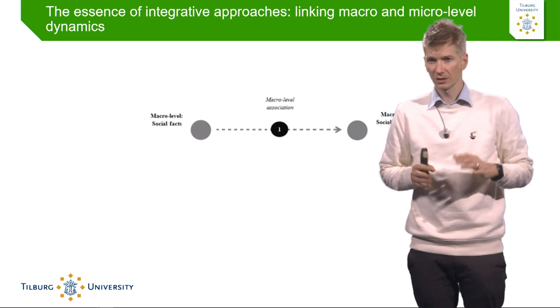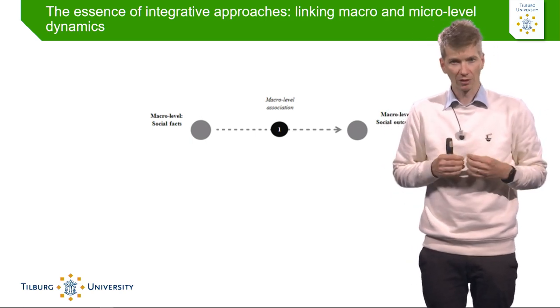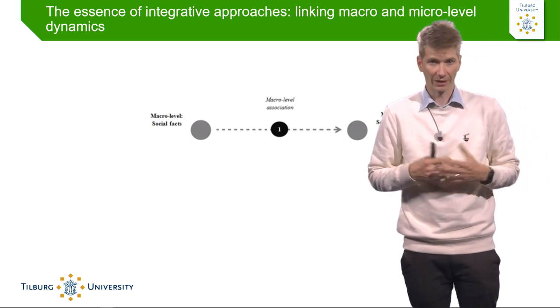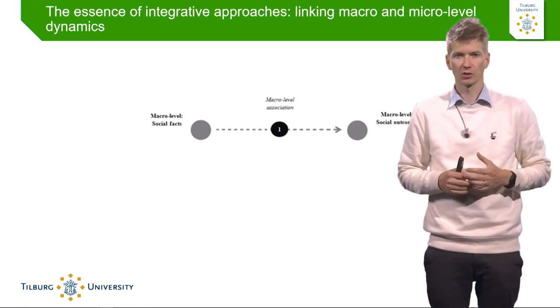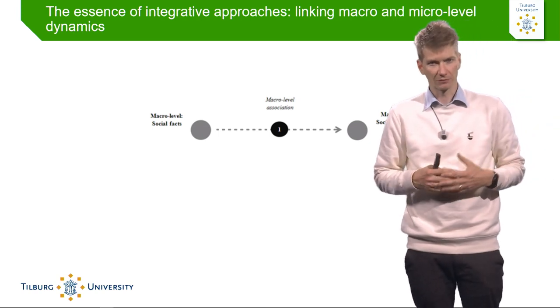Welcome to this final knowledge clip on theories of international migration. The different knowledge clips provided an overview of how migration can be explained from a macro level perspective, meso level perspective, and micro level perspective. But one major question remains: how can we make sense of macro and meso level associations at the micro level? We will dive deeper into how micro level mechanisms can explain macro level dynamics, which is the essence of integrative approaches like social network theories or migration transition theories.